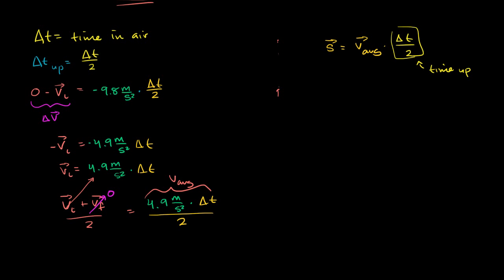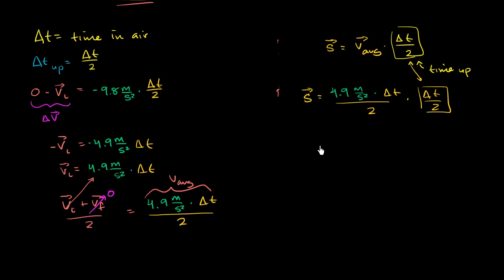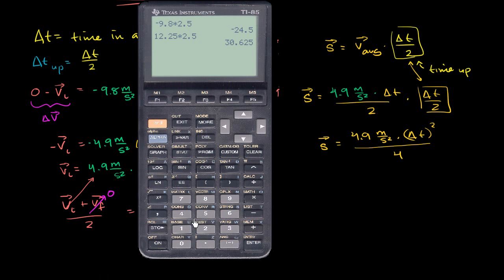So our maximum displacement is going to be our average velocity — 4.9 meters per second squared times delta t, all over 2 — multiplied again by the time up, which is delta t over 2 again. Our maximum displacement is equal to 4.9 meters per second squared times delta t squared, all over 4. Then we divide 4.9 by 4, which is 1.225 — let me just get the calculator out, I don't want to make a careless mistake. 4.9 divided by 4 is 1.225.